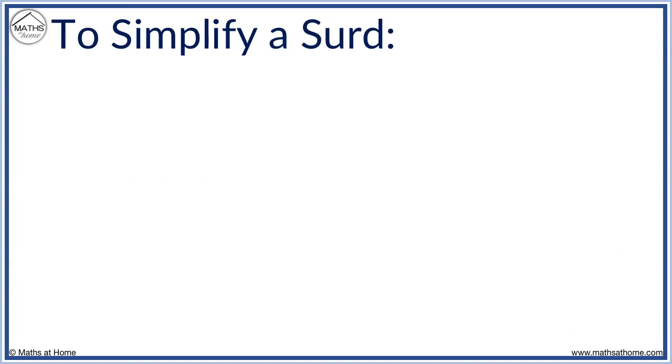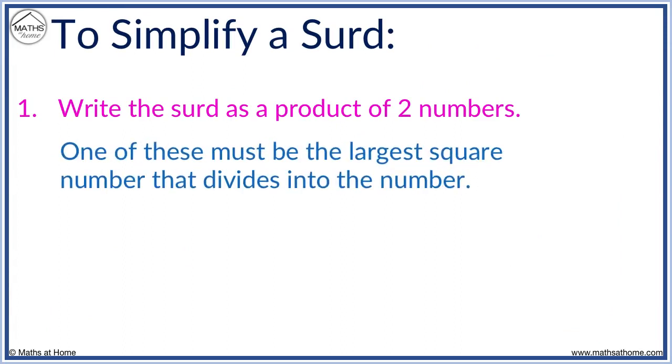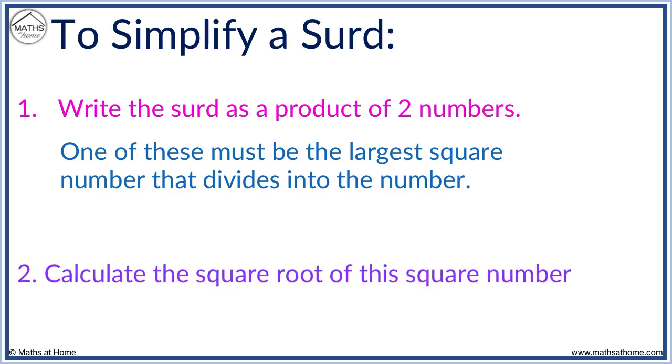To simplify a surd write the surd as a product of two numbers. One of these numbers must be the largest square number that divides into the original number. Then we calculate the square root of this square number.